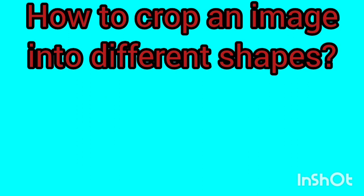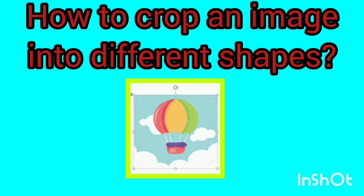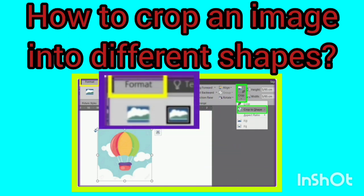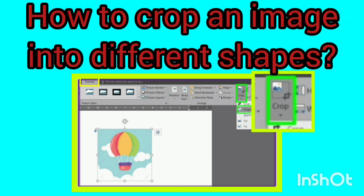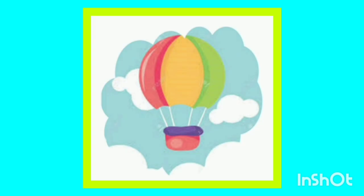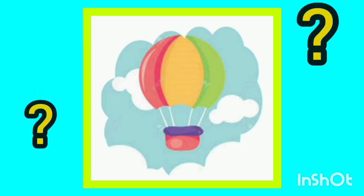Now we want to learn how to crop an image into different shapes. Click on the image once to select it. Then by selecting the image, the Format tab will be shown automatically, which I marked with a yellow box. Click on the Crop icon marked with a green box. Select the 'Crop to Shape' option from the open menu and choose the shape you want to crop the image. Finally, press the Enter key on the keyboard to keep the image stable. My picture is in the shape of a cloud — what shape did you choose for your picture?